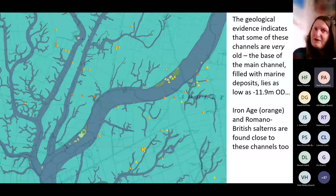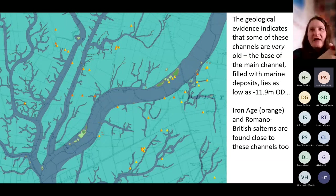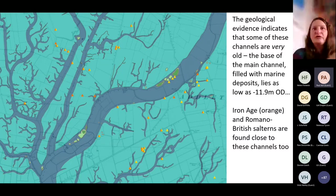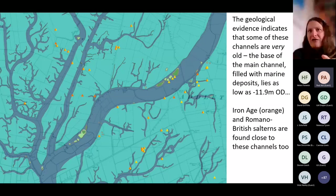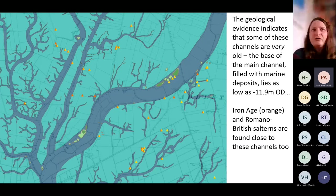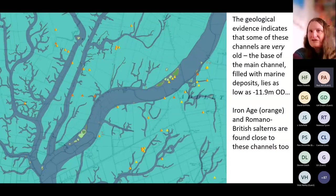The geological evidence, combined with the LIDAR and other material, suggests that some of these channels are extremely old. That main channel has a base as low as minus 11.9 metres OD, which suggests it was flooded probably sometime in the Mesolithic period originally — extremely ancient but persistent channels that were still leaving their traces in the post-Roman era. The Iron Age and Romano-British salt-making sites found in the area match up relatively nicely with what can still be seen on the surface after the latest period of marine flooding. These do seem to be fairly persistent channels.